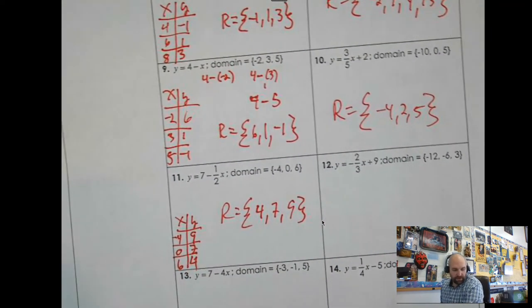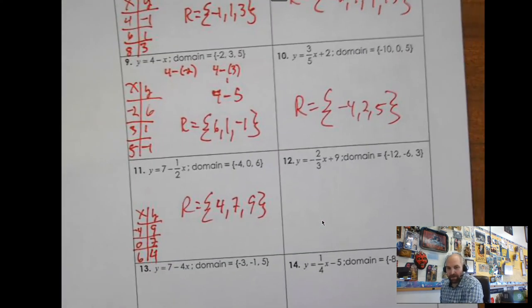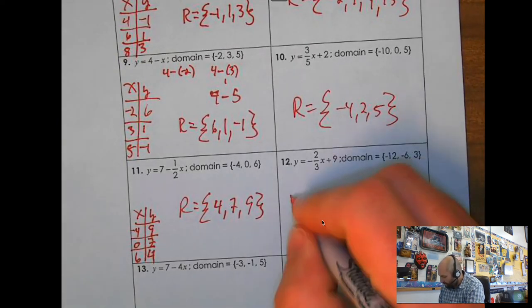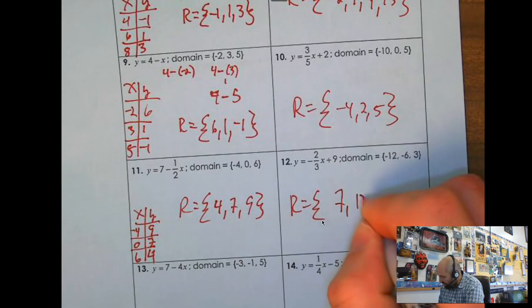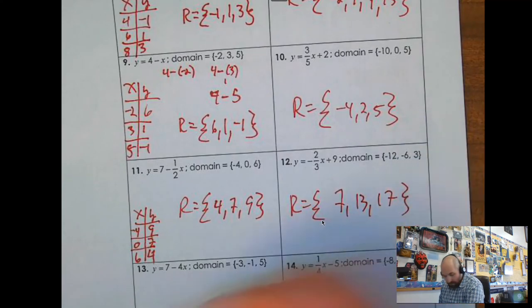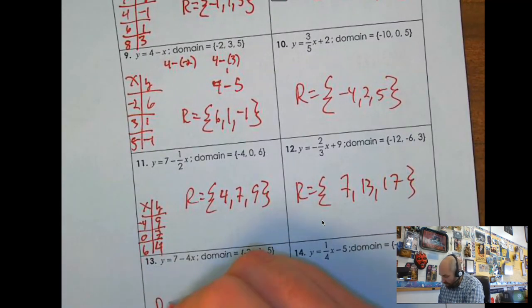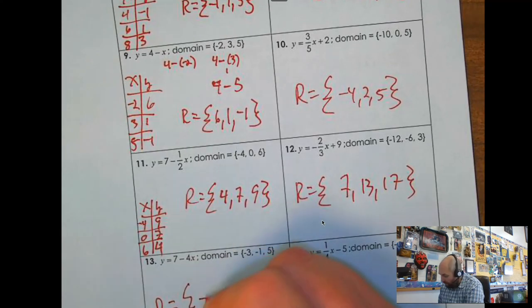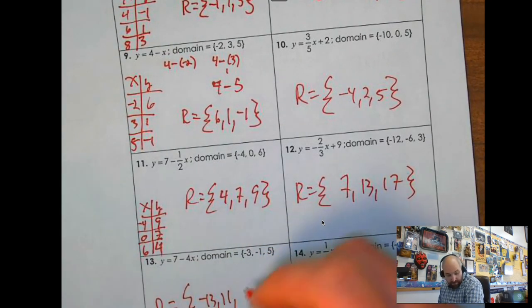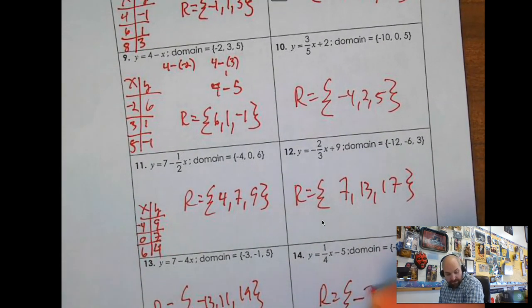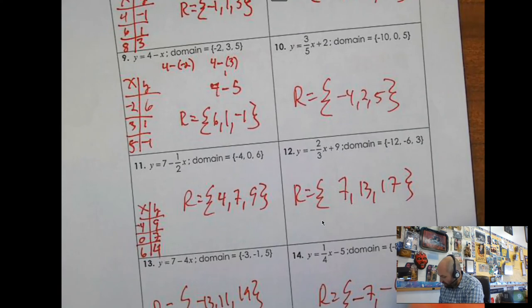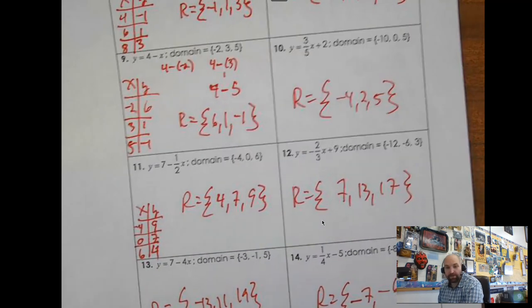Why don't you try number 12, 13, and 14? And I'll see you back here in a minute. 12, if you did that one right, you got 7, 13, and 17. 13, if you did that one right, you got negative 13, 11, and 19. And then 14, if you did that one right, you got negative 7, negative 6, and negative 2. So that's pretty much how it works.